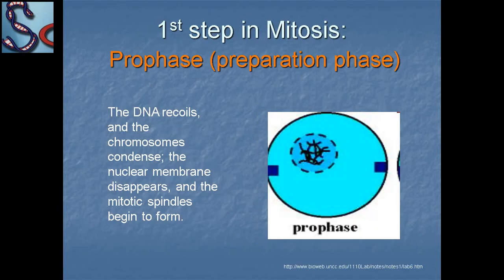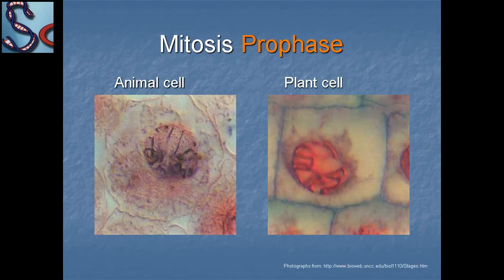After interphase, the first step of mitosis — prophase, or preparation phase — starts. The DNA coils and the chromosomes condense. The nuclear membrane disappears and the mitotic spindles begin to form, as seen in both animal and plant cells during prophase.